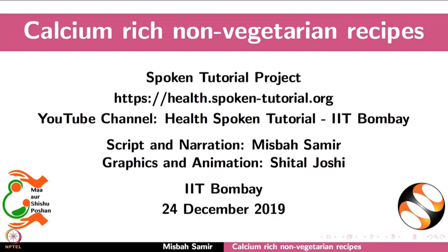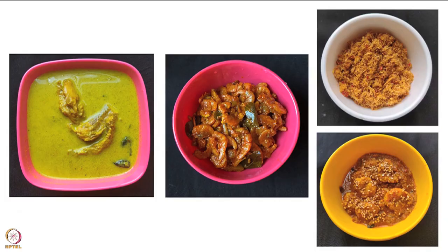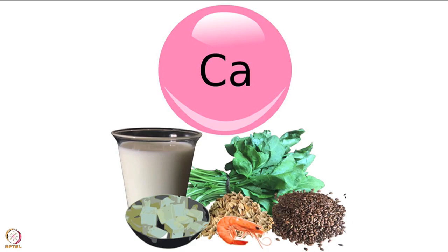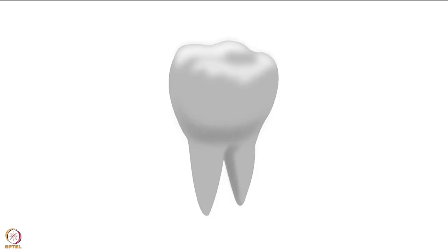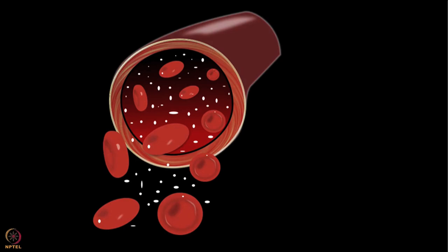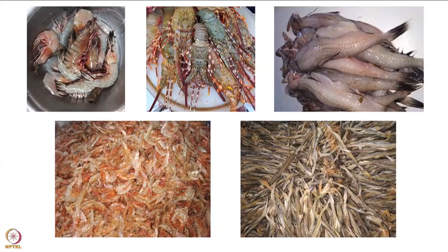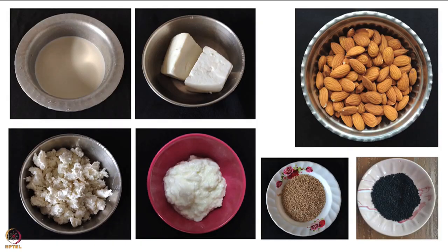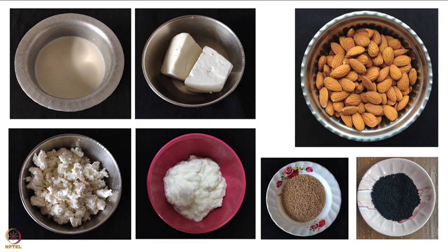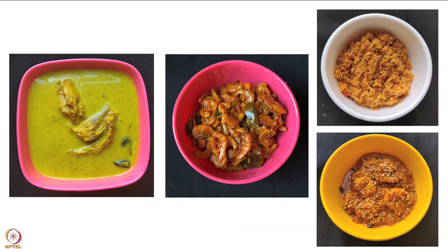Welcome to the spoken tutorial on calcium-rich non-vegetarian recipes. In this tutorial we will learn about a few calcium-rich non-vegetarian recipes. Non-vegetarian foods rich in calcium include prawns, lobsters, Bombay duck, dried shrimp, and dried bony fishes. Other calcium sources include milk, milk products, nuts, seeds, green leafy vegetables, and some legumes.